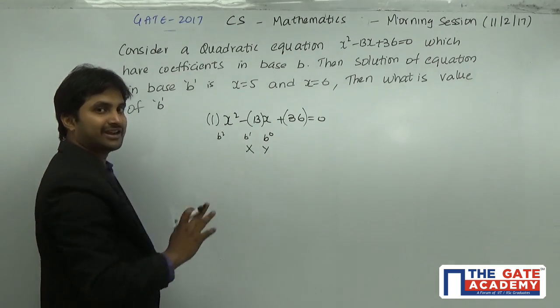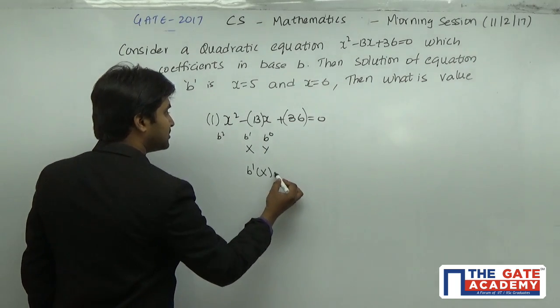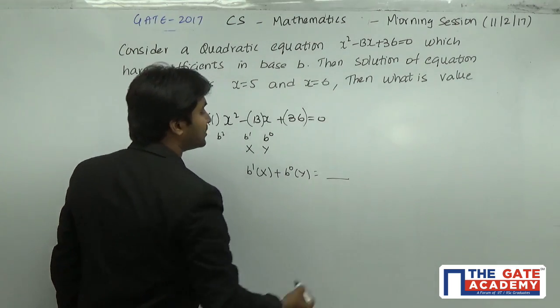So ultimately we can convert it in the form of decimal as equal to B¹ × x + B⁰ × y. Now this is going to be a number in the form of a decimal number.